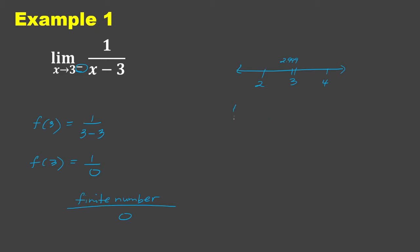Substituting that, we have 1 over (2.999 minus 3). Let us consider the sign of the output: the numerator is positive over (2.999 minus 3), which gives a negative number. Performing the operation, we have positive divided by negative, which gives negative infinity. So for this example, the answer is negative infinity.